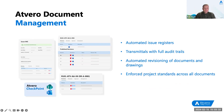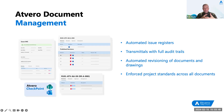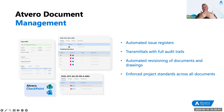As project information software, Atvero helps project teams track every single version of all sent and received drawings and documents. We also have an automated issue register. Within Atvero, accessing the complete version history of files is really simple, whilst ensuring that the challenges of using folders — particularly finding information — is overcome. Team members find it far easier to access the most recent documentation exactly when they need it.